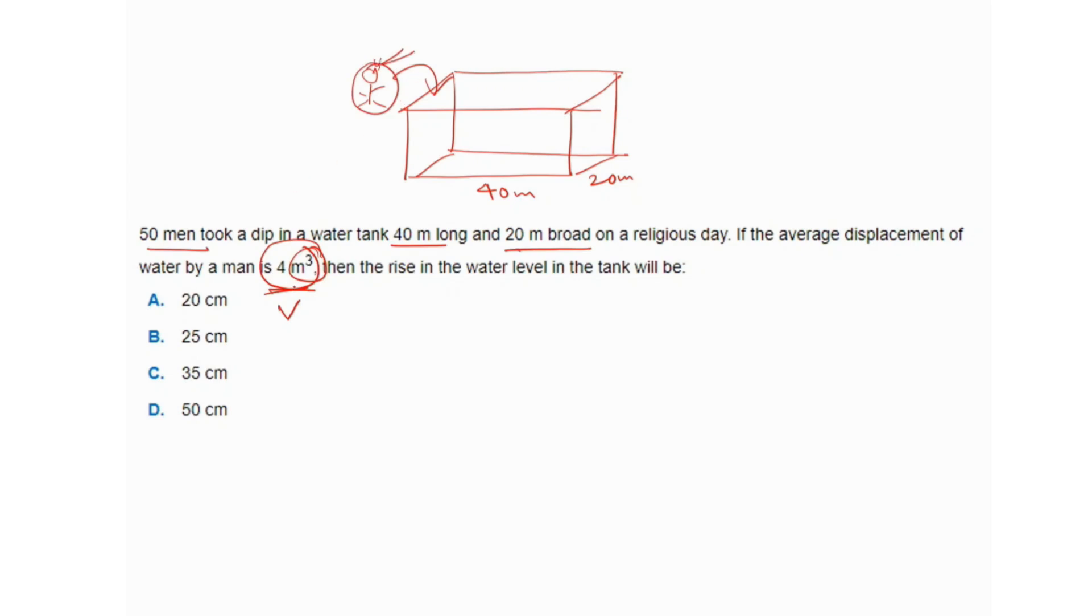How much total volume is displaced by 50 men? The total volume displaced would be 50 times the volume displaced by one person, so 50 × 4 = 200. Now for the rise in the water level...